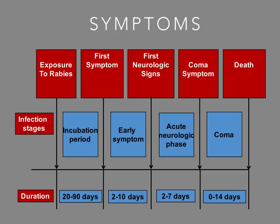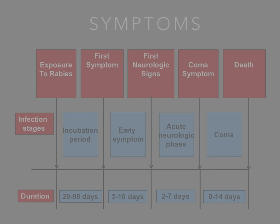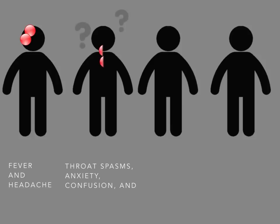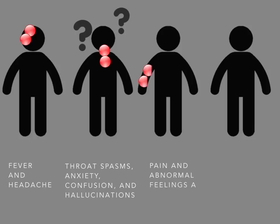The first neurological sign is an acute neurological phase, with symptoms like anxiety and confusion, lasting 2 to 7 days. A coma symptom can last over 14 days, and unfortunately the last symptom is death. To summarize the symptoms: fever and headache, throat spasms, anxiety, confusion, and hallucinations, pain and abnormal feelings at the wound, coma, and sadly death.